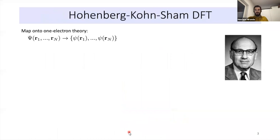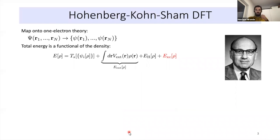The solution, already alluded to on the first day, is to map this many-body problem to a one-electron theory. Instead of a big object depending on many variables, we have small objects where each function depends on one variable — one function for each electron depending only on a single variable. This is the idea in Kohn-Sham DFT: you start with one-electron orbitals and define a total energy as a functional of the density, containing a kinetic term that depends on these orbitals.